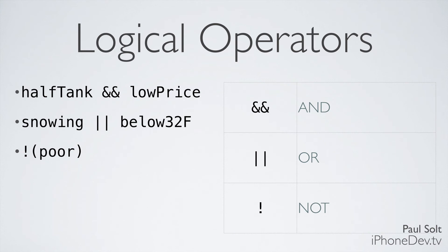The last thing to touch on before we jump into code is logical operators. These allow us to combine multiple expressions. If I'm looking to buy gas, I'm only going to buy gas if I have a half tank or lower AND the current gas station has a low price — two conditions must both be true. Similarly, for wearing a hat: if it's snowing OR if it's below 32 degrees Fahrenheit, those are good times to put on a hat. It doesn't have to be both — just one needs to be true.